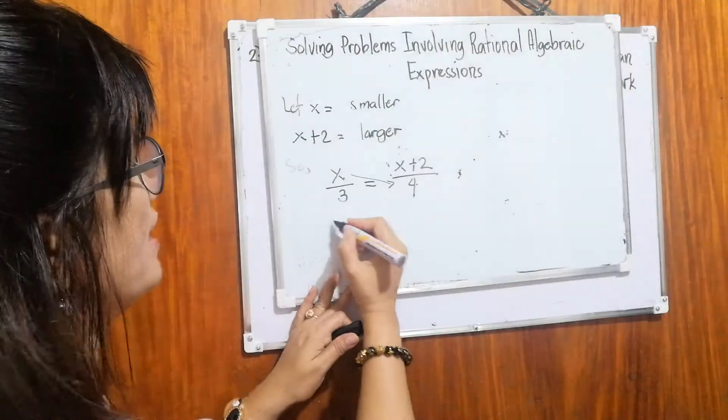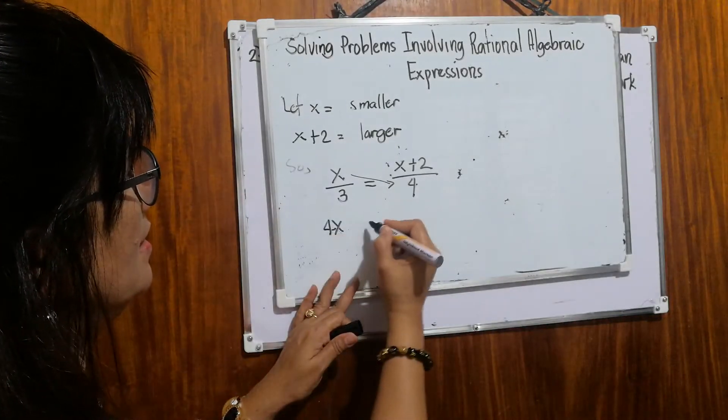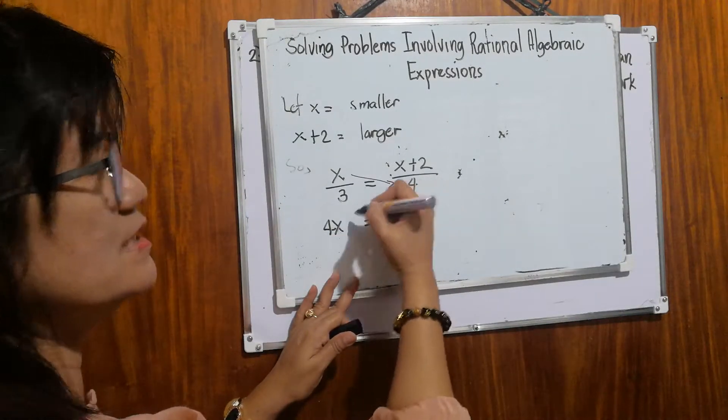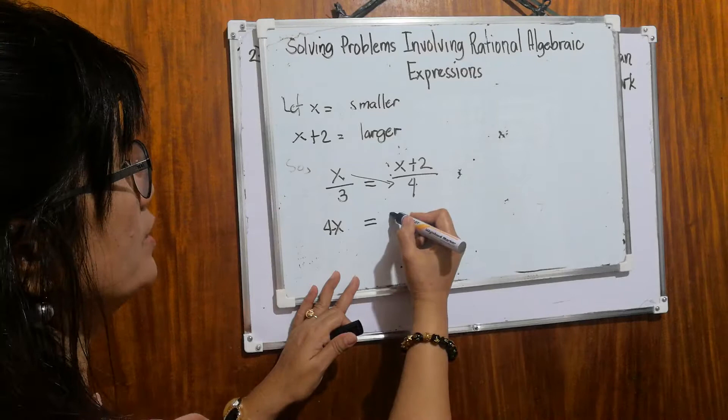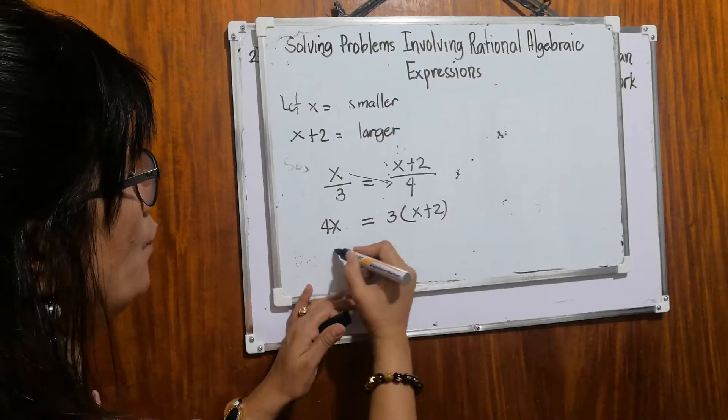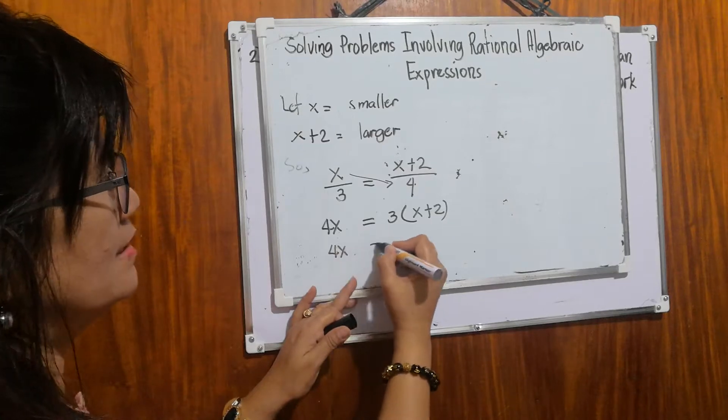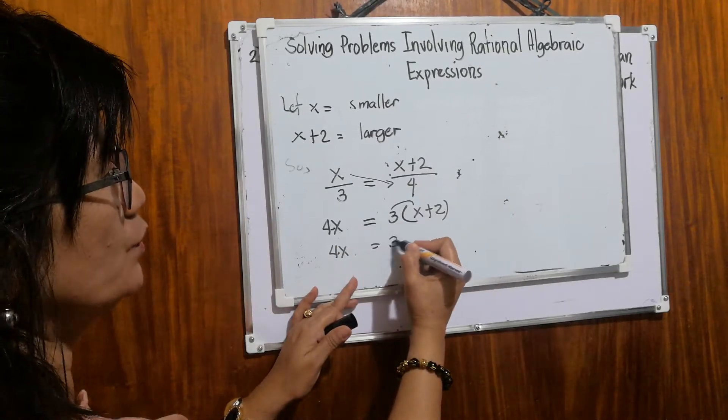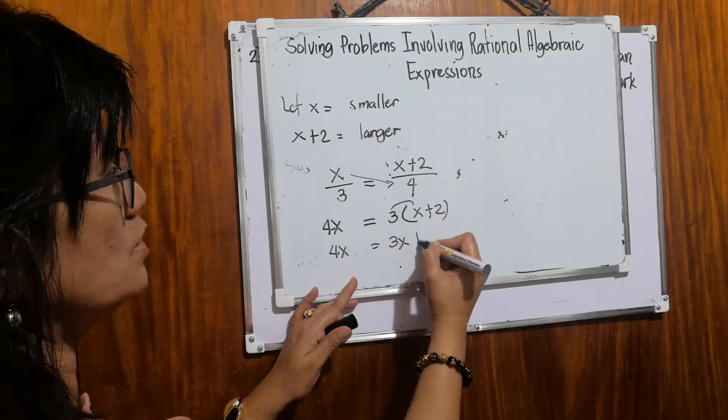What is four times x? We have 4x. Then what is three times x plus two? It will be three times x plus two. So you bring down 4x. Three times x equals 3x. Three times two equals six.